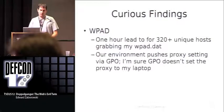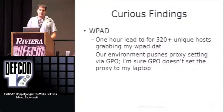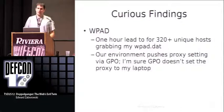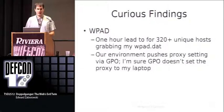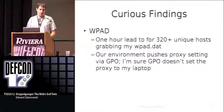Some curious findings from when I was creating this tool: when I first updated the WPAD DNS record, I had about 320 hosts pinging my laptop as their proxy within about an hour. Our environment uses a GPO to push out proxy settings as well as a baseline image, so those 320 hosts were looking at my laptop to be their proxy. Also not on the slides: Internet Explorer was the biggest offender using WPAD autoproxy detection, but there were other browsers in there too such as Firefox and Opera, which was a bit of a surprise.